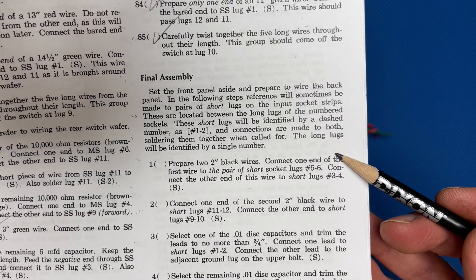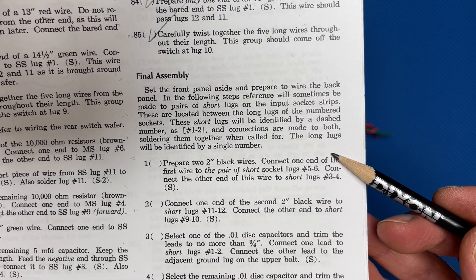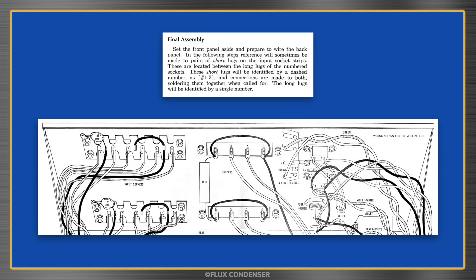And we're finally at the last section, final assembly. What do we need to know, Lady Di? Final assembly. Set the front panel aside and prepare to wire the back panel. In the following steps, reference will sometimes be made to pairs of short lugs on the input socket strips. These are located between the long lugs of the numbered sockets. These short lugs will be identified by a dashed number, as in 1-2, and connections are made to both, soldering them together when called for. The long lugs will be identified by a single number. Okay, got it. Thanks.